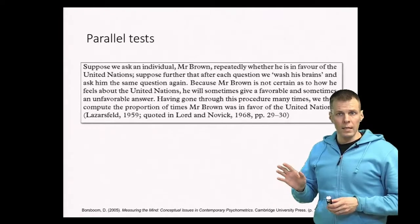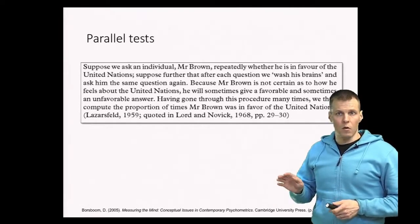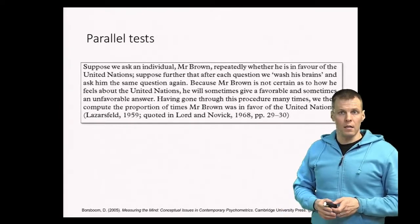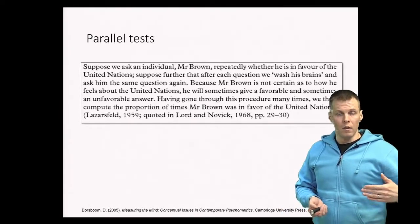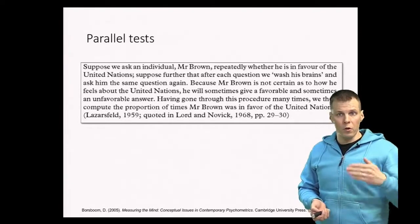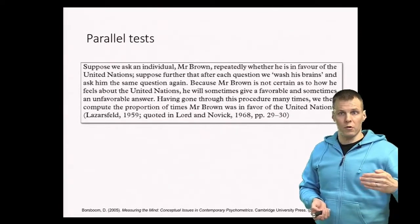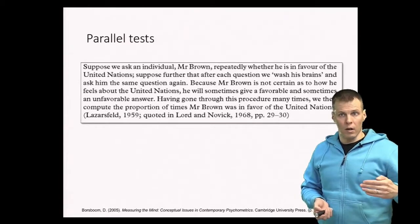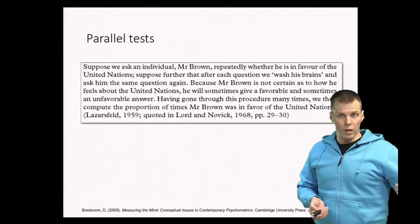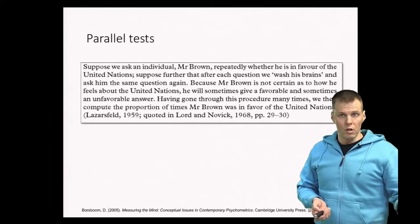Classical test theory has this concept of parallel tests. The idea of a parallel test is a hypothetical scenario where we measure the same person again without that person having any recollection of the previous measurement. For example, if we ask Mr. Brown whether he likes the United Nations or not,